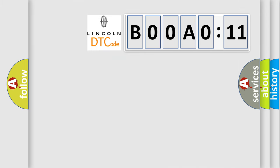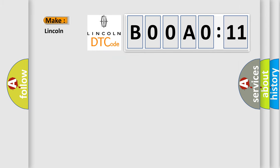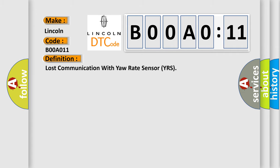So, what does the diagnostic trouble code B00A011 interpret specifically for Lincoln car manufacturers? The basic definition is: lost communication with yaw rate sensor YRS. And now this is a short description of this DTC code.